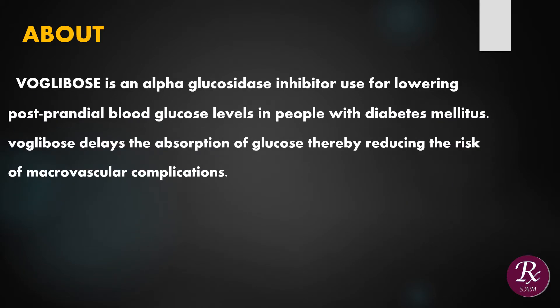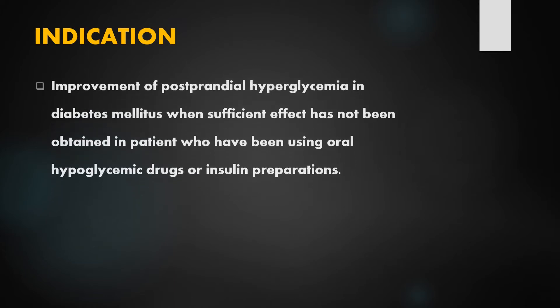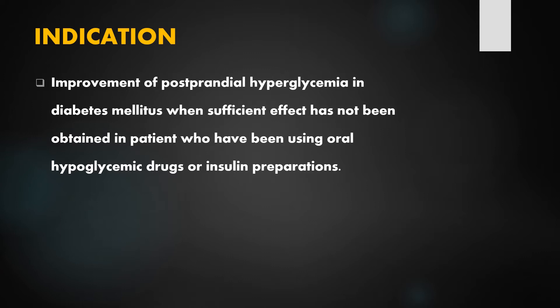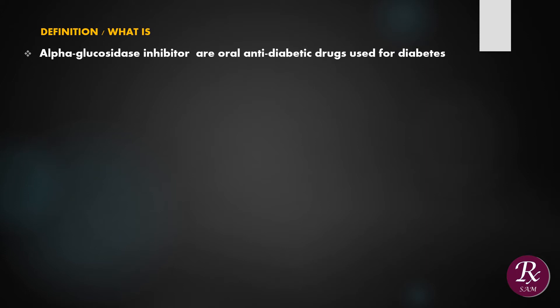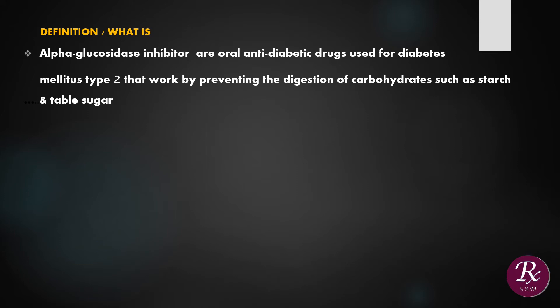Voglibose is an alpha-glucosidase inhibitor used for lowering postprandial blood glucose level in people with diabetes mellitus. Voglibose delays the absorption of glucose, thereby reducing the risk of macrovascular complications. Improvement of postprandial hyperglycemia in diabetes mellitus when sufficient effect has not been obtained in patients who have been using oral hypoglycemic drug or insulin preparation.